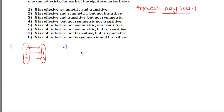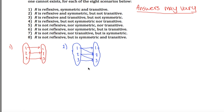Number two: reflexive and symmetric but not transitive. I've got three elements. I need it to be reflexive, so we'll start with the self-arrows. But I need it to not be transitive, so I'll throw an arrow from one to two and an arrow from two to three, but no arrow from one to three — that breaks transitivity. I need to also make it symmetric, so I'll add arrows back in both directions. It's not transitive because there's an arrow from one to two and from two to three, but there is not an arrow from one to three.